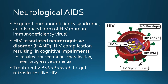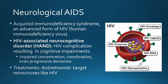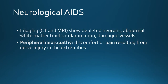Neurological AIDS: AIDS is the Acquired Immunodeficiency Syndrome caused by infection with the HIV virus. In 2015, around 2 million people worldwide were detected with HIV infection, and about half of them developed a neurocognitive disorder as well, with cognitive impairments including impaired concentration, coordination, and progressive dementia in some cases. Treatments are usually a cocktail of three antiretrovirals targeting the HIV virus. In patients with HIV-associated neurocognitive disorder, there are increasing problems with memory and an overall slowing of mental processes. This is detected using CT and MRI scans, and patients show depleted neurons, abnormal white matter tracts, inflammation in the brain, and damaged vessels.